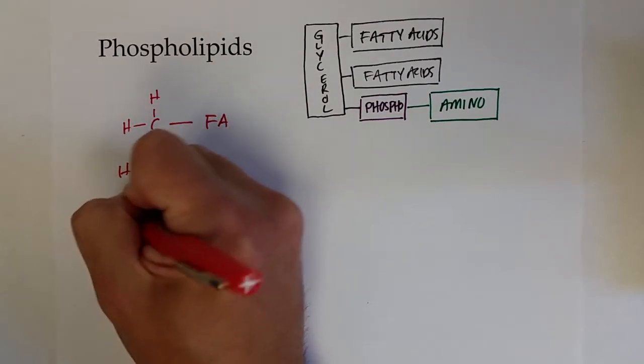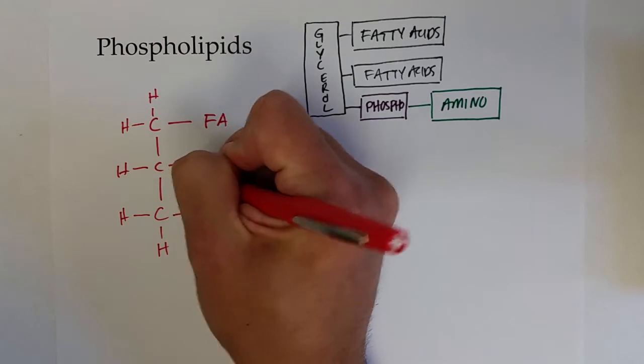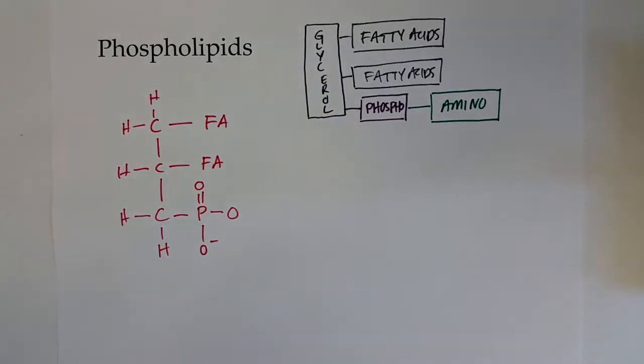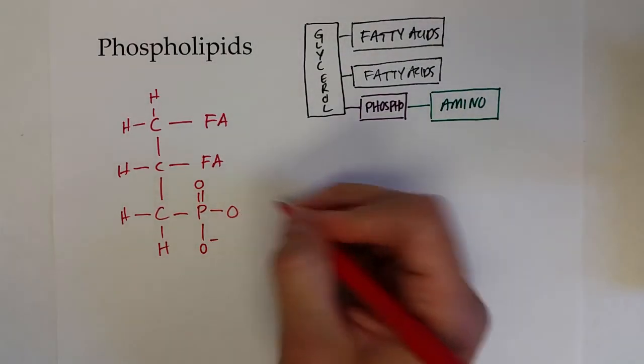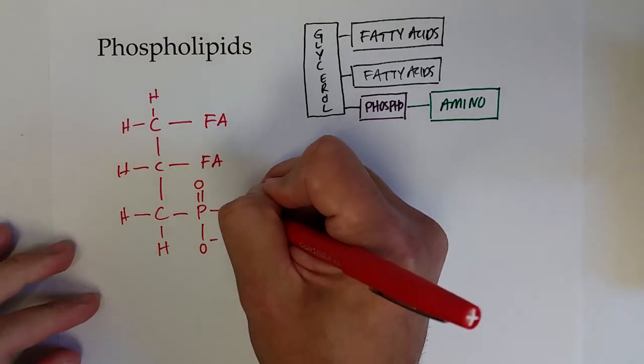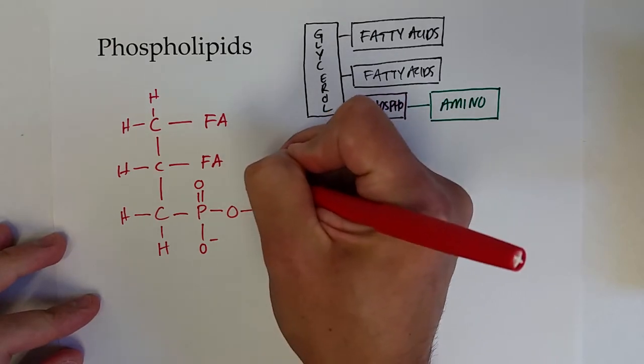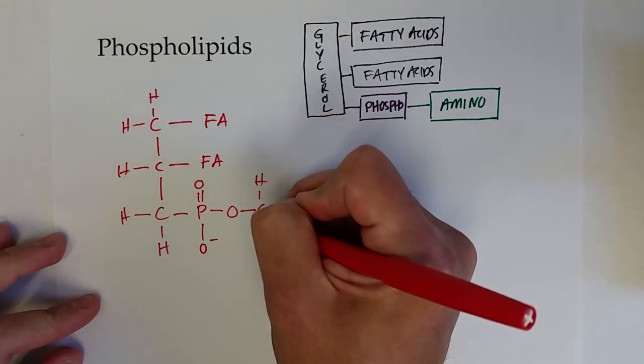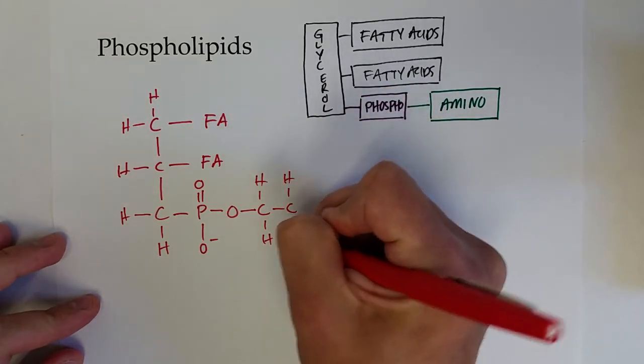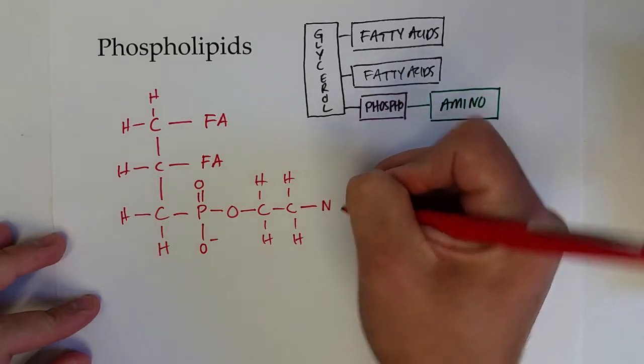This third carbon is connected to a phosphogroup, as I said. And then this oxygen is then connected to an amine group. So something like a couple of carbons and then an amine.